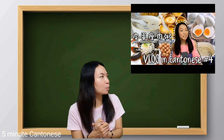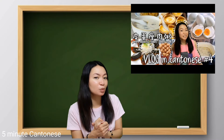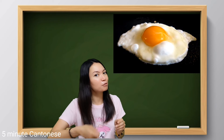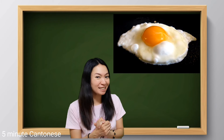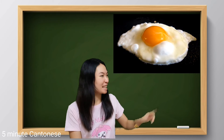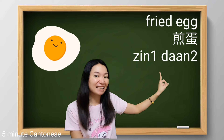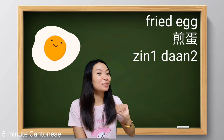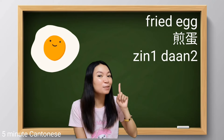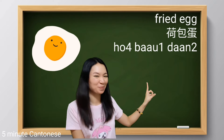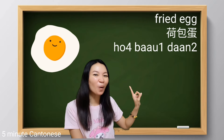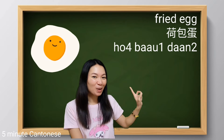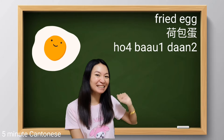We have already learned how to say boiled egg and scrambled egg in a previous lesson. How about fried egg? We say 煎蛋. 煎蛋.